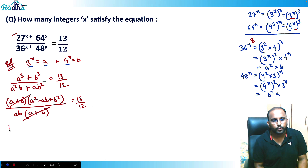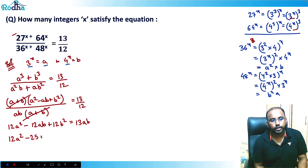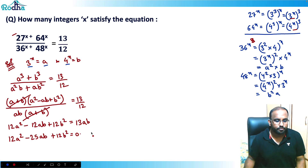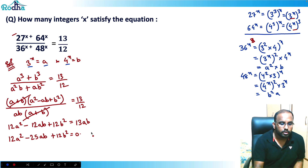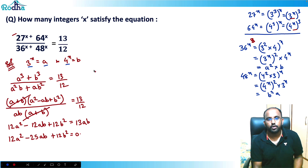Cross-multiplying: 12a² - 12ab + 12b² = 13ab, which gives 12a² - 25ab + 12b² = 0.